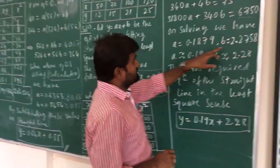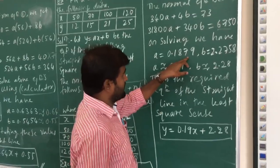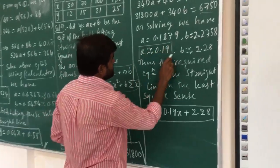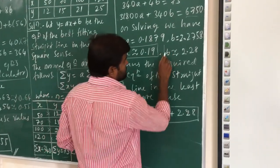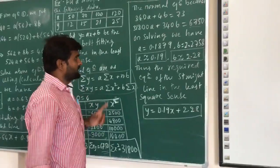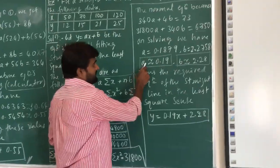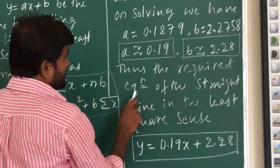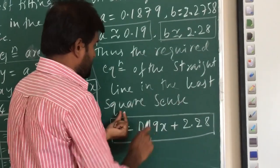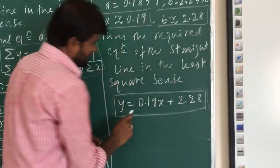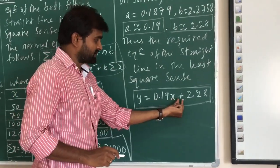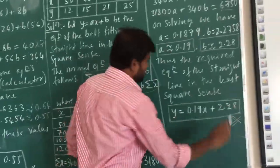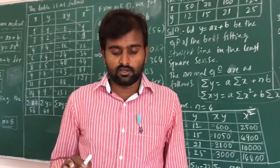Solving these equations, we get a ≈ 0.1279 and b ≈ 2.28. Thus the required equation of the straight line in the least square sense is y = 0.19x + 2.28. This completes fitting a curve using a straight line.